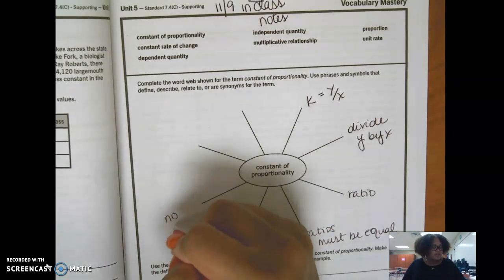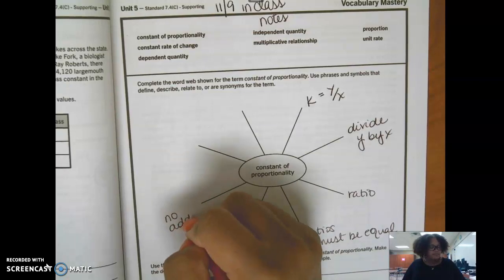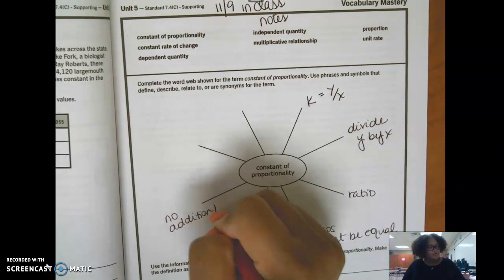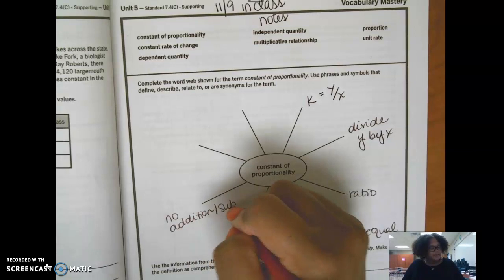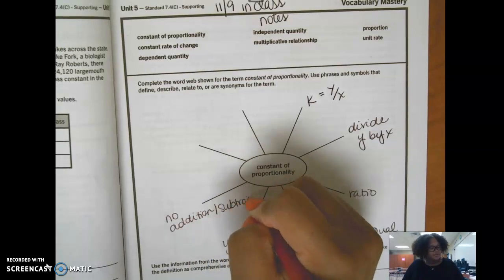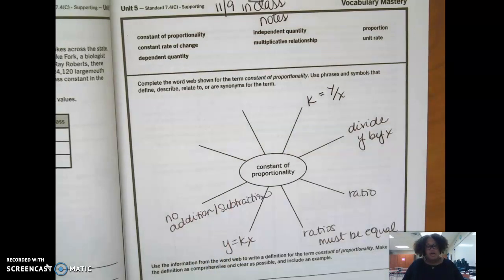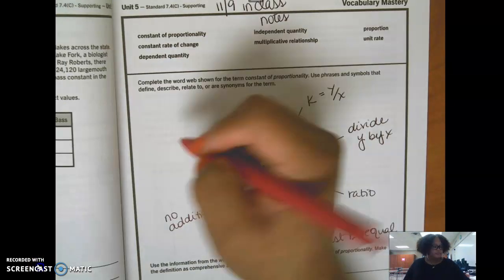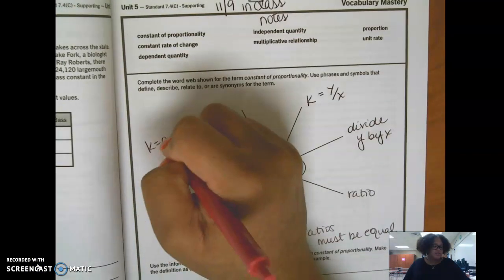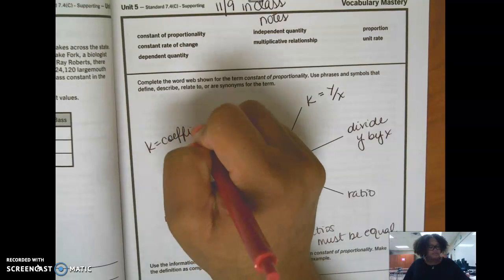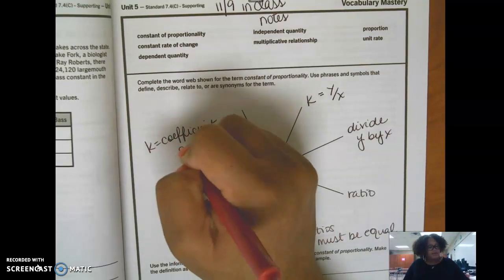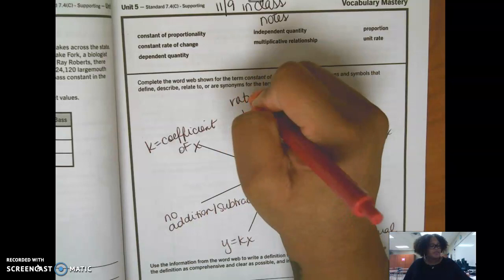No addition or subtraction in the equation. Subtraction whole place. k is a coefficient of x and it can be a rational number.